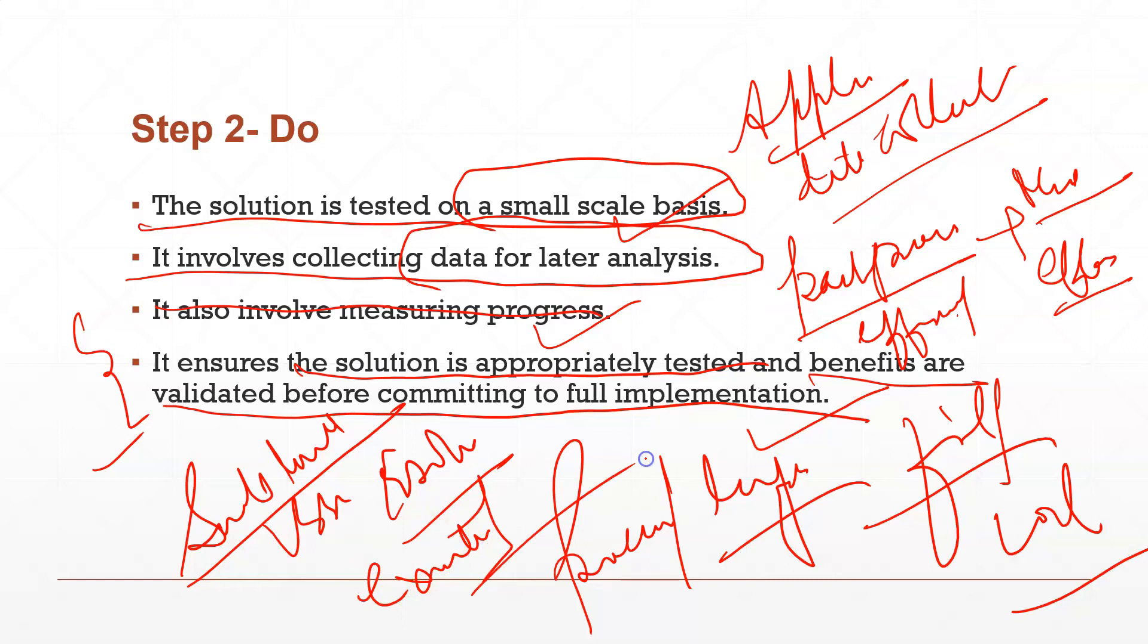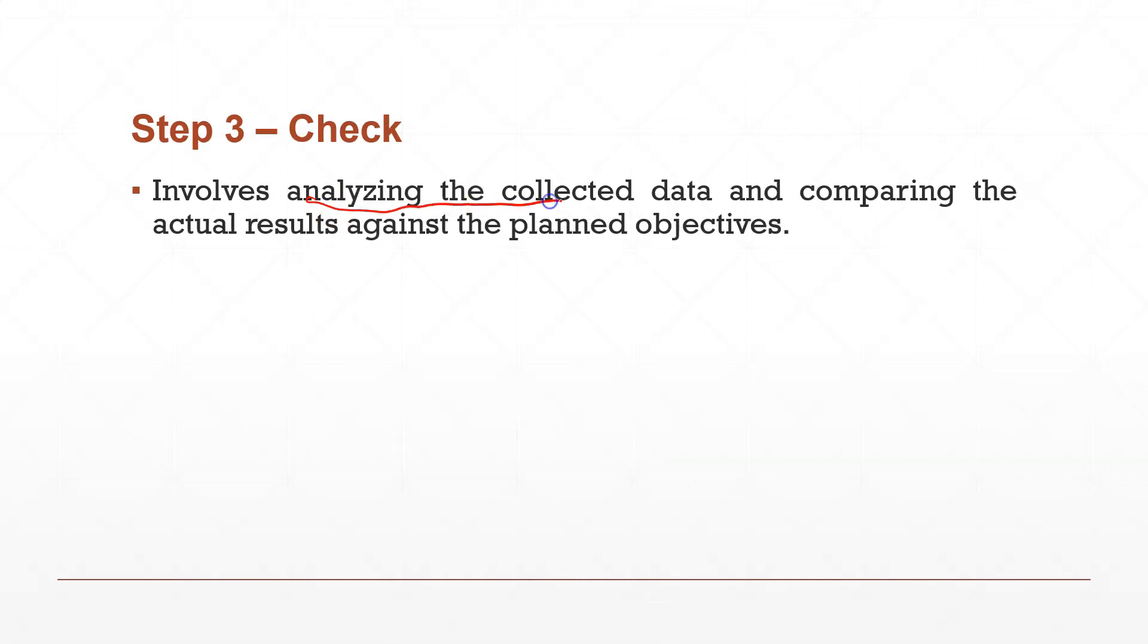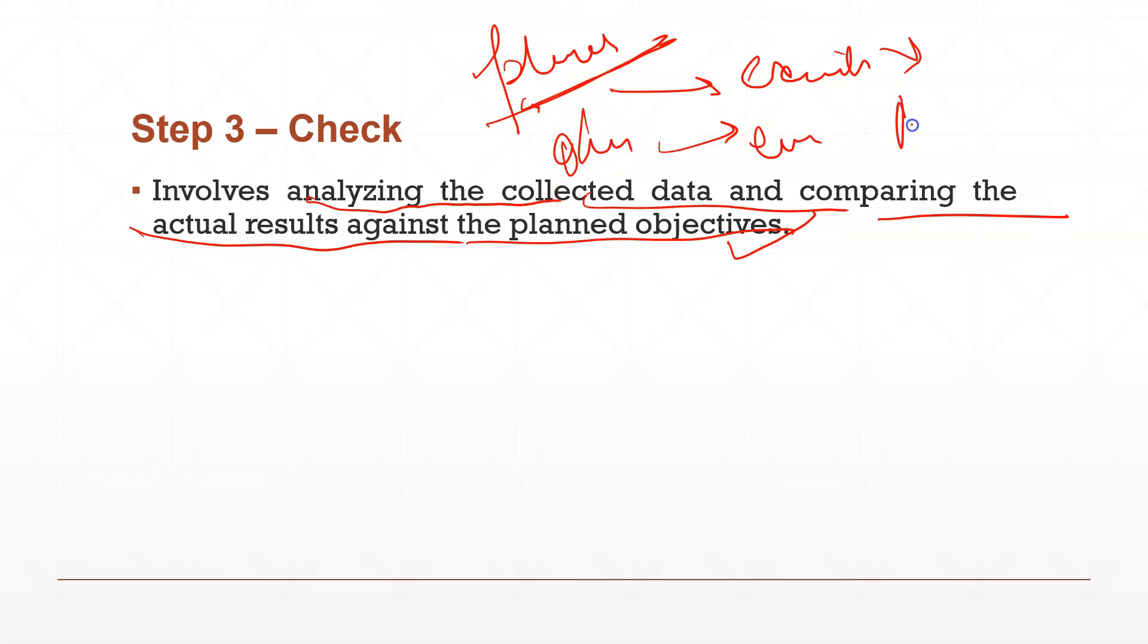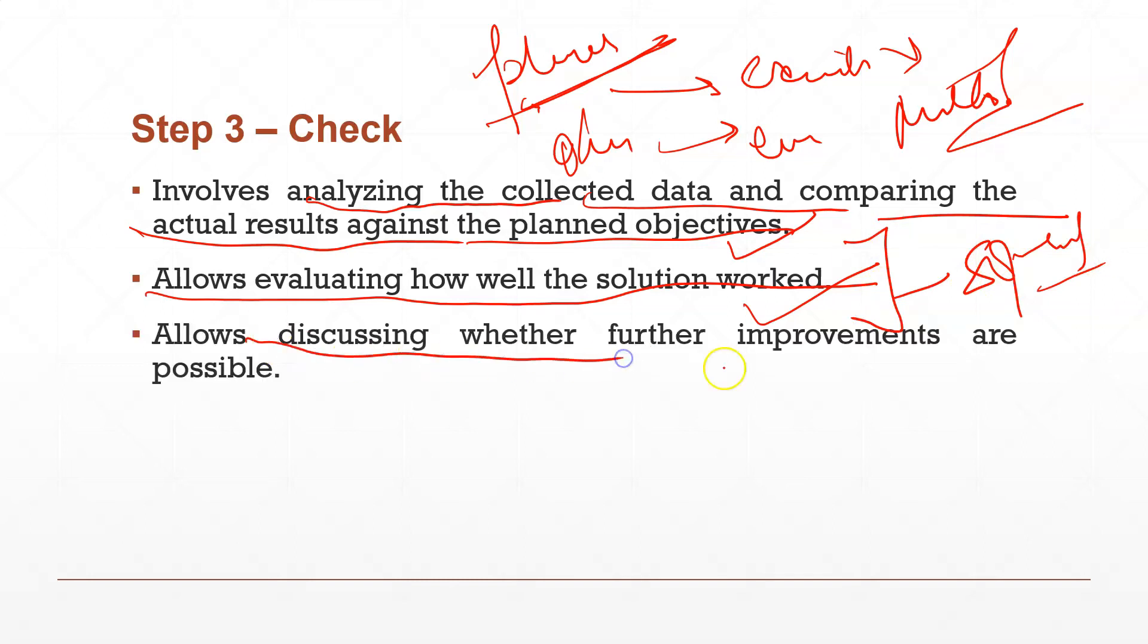Let's talk about the third step which is called Check. In the check stage, you involve analyzing the collected data and comparing the actual results against the planned objectives. Obviously, the planned objectives you made in step one and executed in step two, in the third step you will check whether the objectives you set and the execution match, whether your objectives are being met or not. It allows evaluating how well the solution has worked. Here you can also find out how well the solution is working on a larger scale. It allows discussing whether further improvements are possible or not. Here you can also check whether there is a possibility for further improvement.